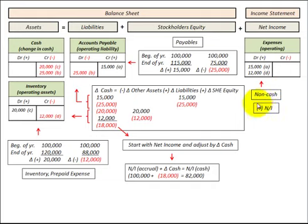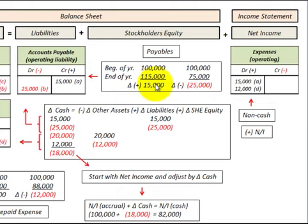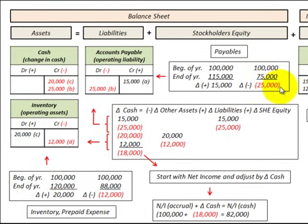For our non-cash expenses, we would add those back to our net income. On the liability side of the equation, that would be for our payables — in this case, accounts payable. This is where we're recognizing the expense ahead of any cash paid. With a $15,000 increase during the year, we'd recognize that as an increase in accounts payable by $15,000, and recognize that same amount as a non-cash expense on net income. In the case where we had a reduction of $25,000, we'd reduce accounts payable by $25,000 and also reduce our cash account by $25,000.